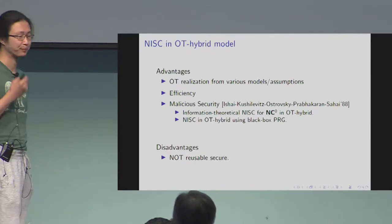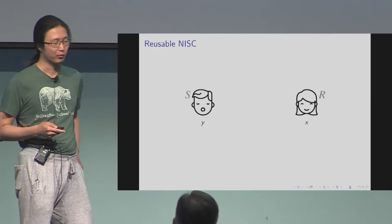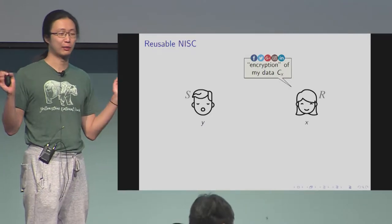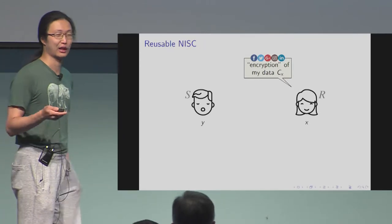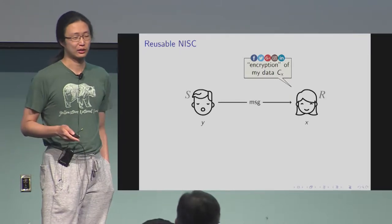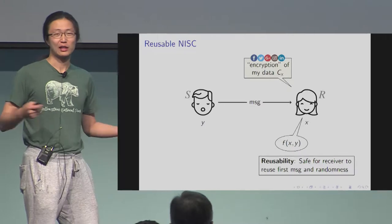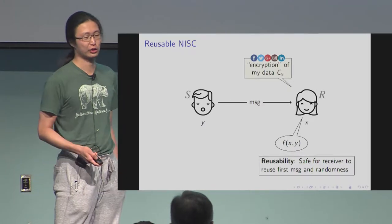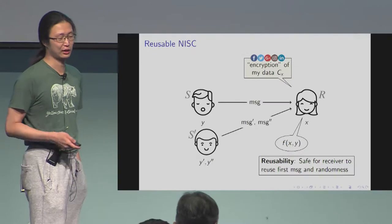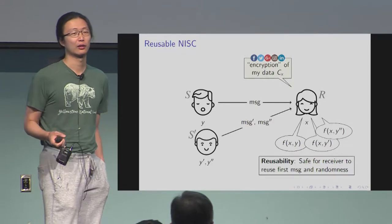But what I'm going to talk about today is reusability. This protocol is not reusable. What does reusable mean and why do we care about it? When you go back to the definition, you should consider that the first message is not sent directly to the sender — it's a public message. You can publish it on your favorite social media like Facebook or Twitter, so that the sender can just grab your message from your Twitter and send you a message, and then the receiver gets the output.